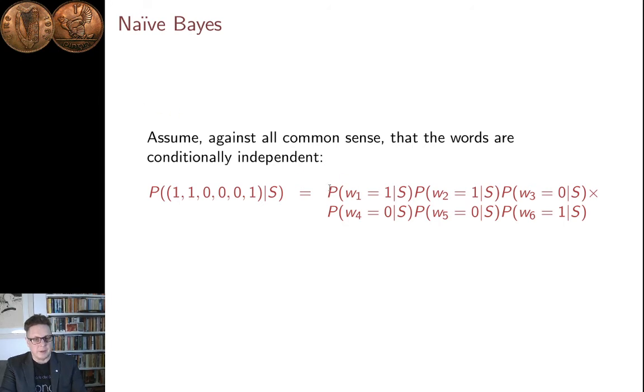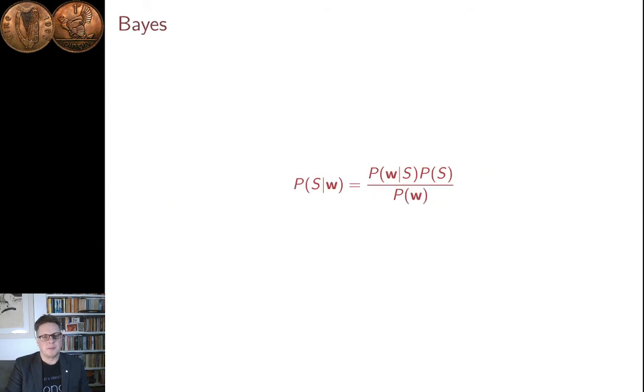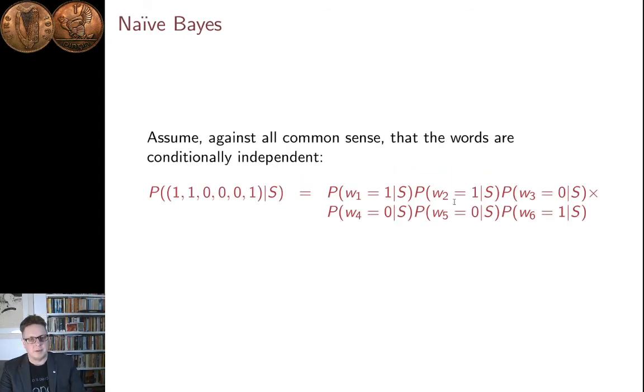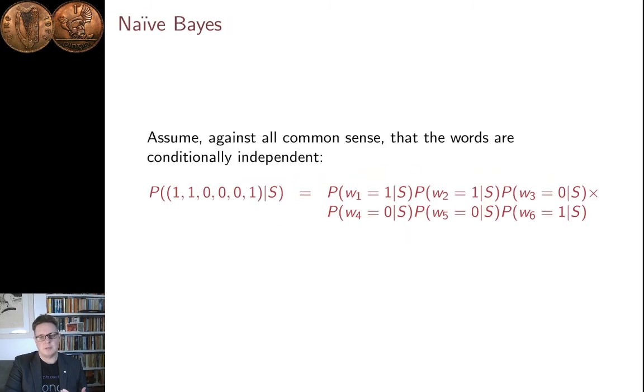And then, what we have to work out are these things here. So, we need to work out the fraction of spam emails that contain the word corresponding to one, which was enlargement. And then, the fraction of spam emails that contain the word corresponding to two, which was XXX, multiplied by the fraction of emails that don't contain the third word, which was cheapest, and so on.